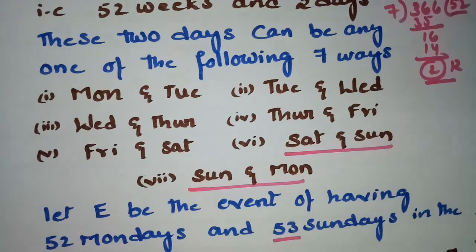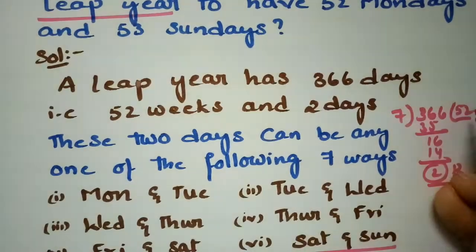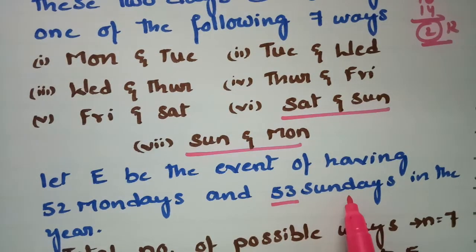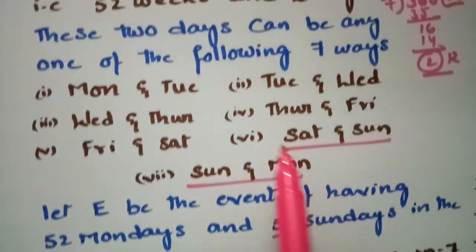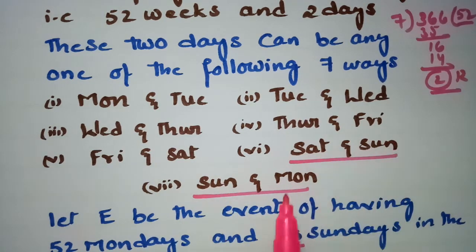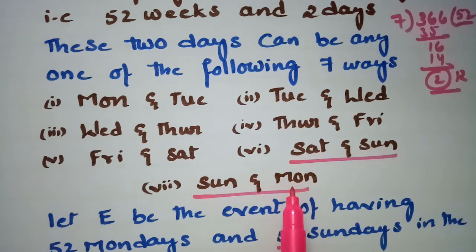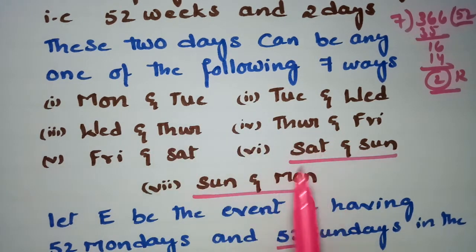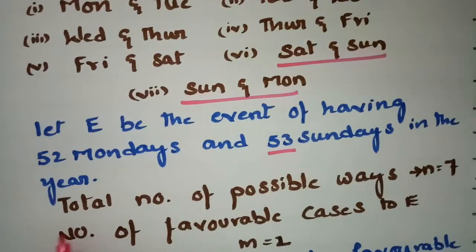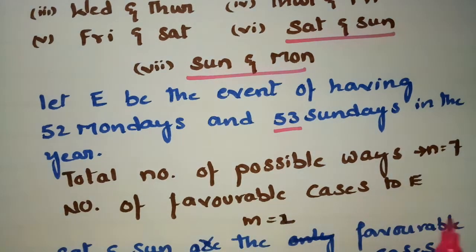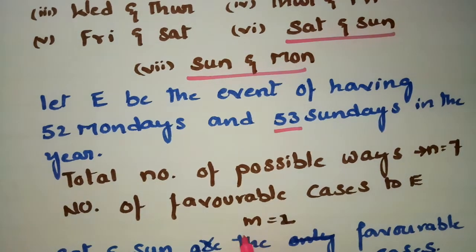Let E be the event of having 52 Mondays and 53 Sundays. In the 52 complete weeks we already have 52 Mondays, so we need the extra day to include a Sunday. Out of these 7 pairs, Sunday appears in two of them: Saturday-Sunday and Sunday-Monday. So we have 2 chances of getting a Sunday, giving us 2 favorable cases.